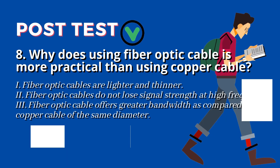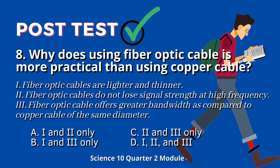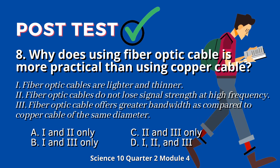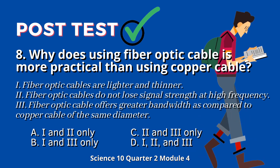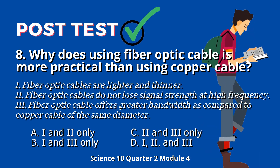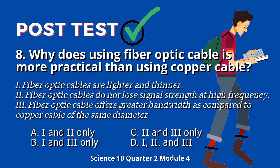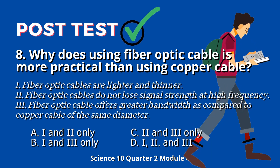Question 8: Why is fiber optic cable more practical than using copper cable? 1. Fiber optic cables are lighter and thinner. 2. Fiber optic cables do not lose signal strength at high frequency. 3. Fiber optic cable offers greater bandwidth as compared to copper cable of the same diameter. A. 1 and 2 only. B. 1 and 3 only. C. 2 and 3 only. D. 1, 2, and 3.